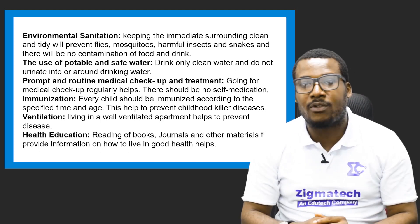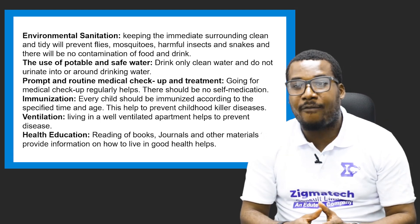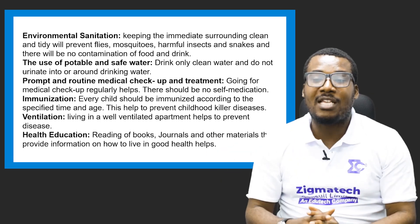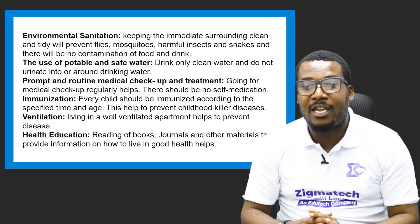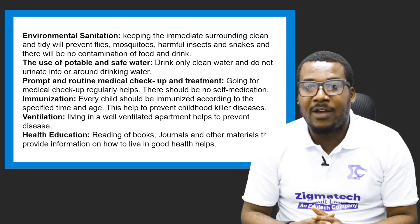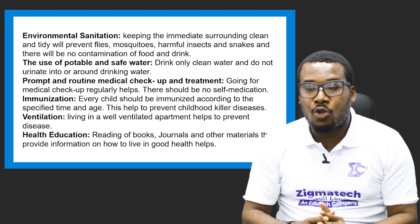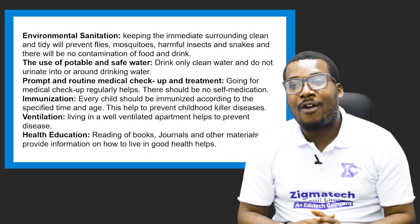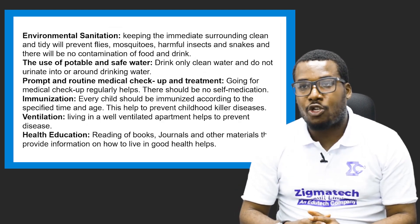The seventh method is ventilation. Let your living area and environment be well ventilated with good air channels, well fumigated against diseases and parasites, and have a good ventilation system that brings in outside air. You can also use air conditioning to help regulate the temperature in your room or apartment.